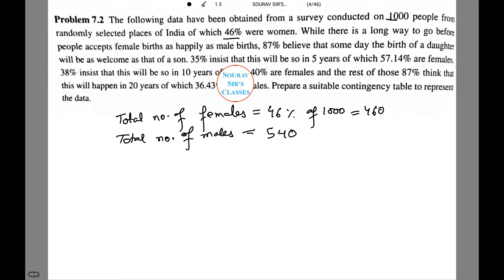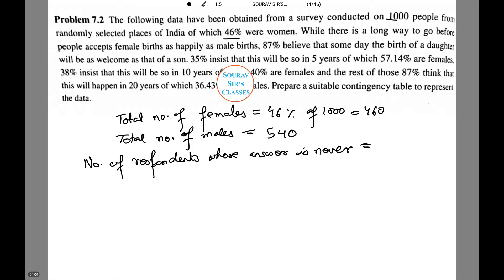Now, the number of respondents whose answer is 'never' equals 13% of 1000, which equals 130. Similarly, we will be doing it for the other categories. The values I have marked in green are what we need to calculate. Further, we will be calculating the number of females in the different categories in the table.